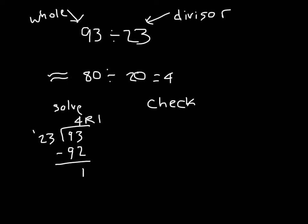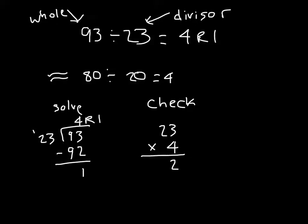Here's our check for that solution of 4 remainder 1. We multiply 23, which was our divisor, by our answer, which was 4. 4 times 3 is 12, regroup 1. 4 times 2 is 8, plus 1 is 9. Then we add back in that remainder: 92 plus 1 is 93. So it does check — this matches with what we are dividing, our whole.